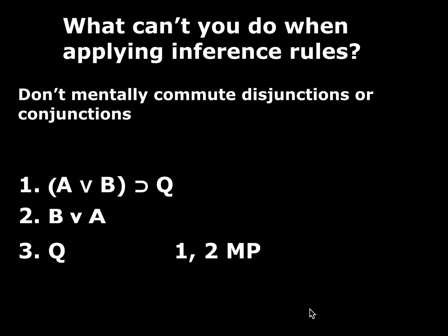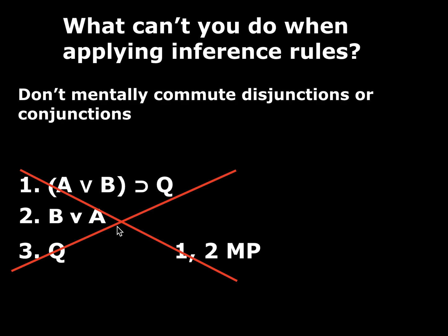Next: don't mentally commute disjunctions or conjunctions. Here's an example. We have a conditional whose antecedent is A or B and consequent is Q. On line two we have B or A. One might say these mean the same thing — and that's right, they do mean the same thing — but they're different statements; they're commuted. So you can't just apply modus ponens using B or A to match the antecedent A or B. In order to do modus ponens you would need this antecedent, which is A or B. B or A is equivalent but not the same statement. When we get to Chapter 4 we'll get a rule that lets us swap the order of disjuncts or conjuncts, but we don't have that rule yet. So don't treat these as the same statement.